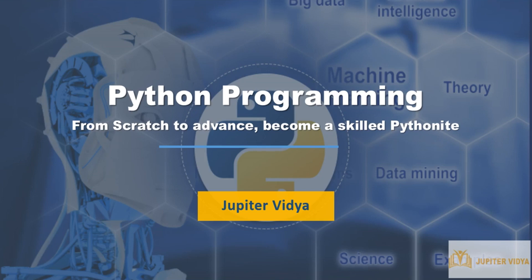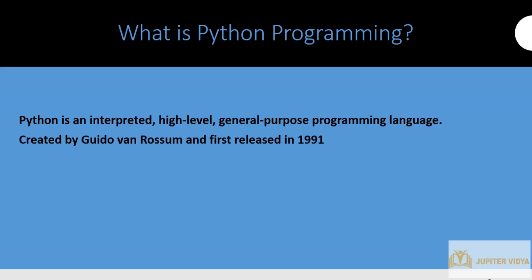Hello everyone and welcome to this Python programming demo session. Python is an interpreted, high-level, general-purpose programming language. First, we need an interpreter to execute the code. It's a high-level language, not a low-level language. Being general-purpose means we can create any kind of application — it's not specific to a specific domain. Python can be used to design a website, create a desktop application, create a game, or even an operating system.